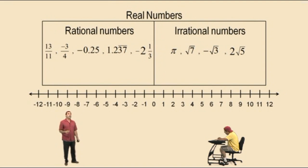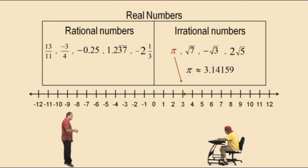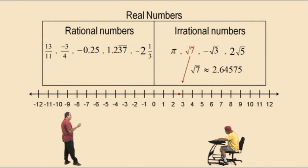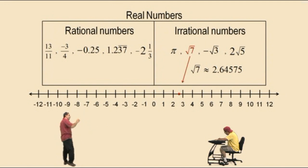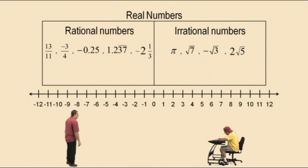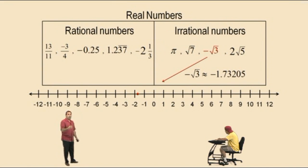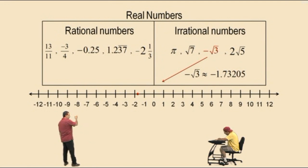Now the irrational numbers. If you have a scientific calculator, you should have a pi key — press it and it gives you a long decimal representation with no pattern. It's about 3.14159 and goes on forever — a little bigger than 3. Take the square root of 7 and you'll see a decimal that goes on forever with no pattern. Notice we put the approximately-equal sign because it can only be approximated — there's no way to write the entire decimal. So it's approximately 2.64575, and we can mark it right there. Same with negative square root of 3: take the square root of 3 and multiply by negative 1, giving approximately negative 1.73205.